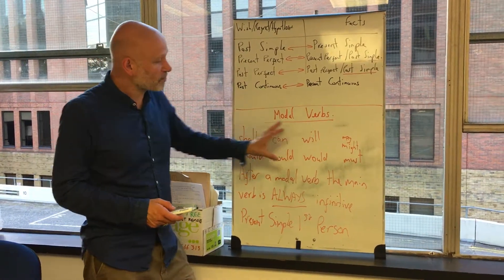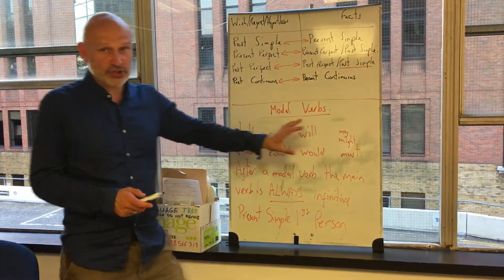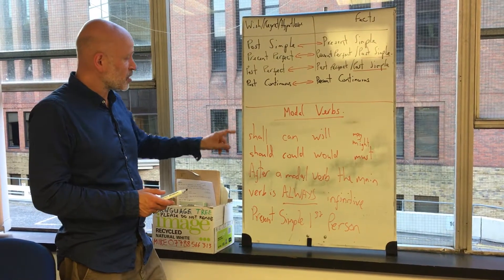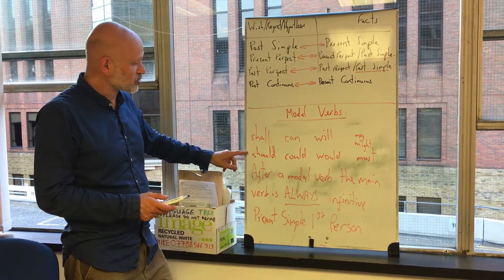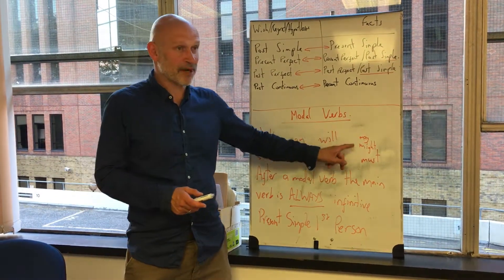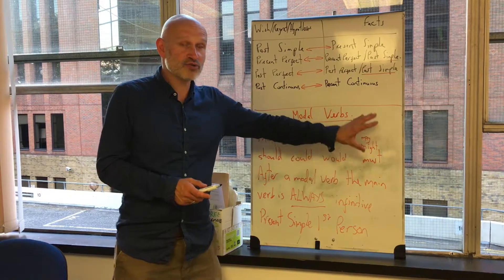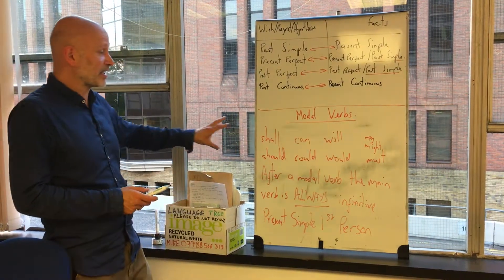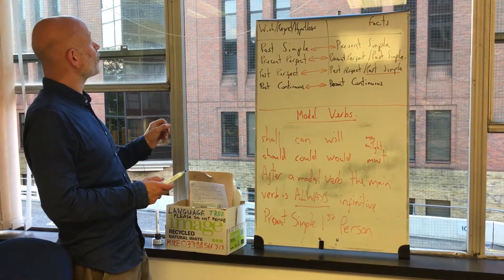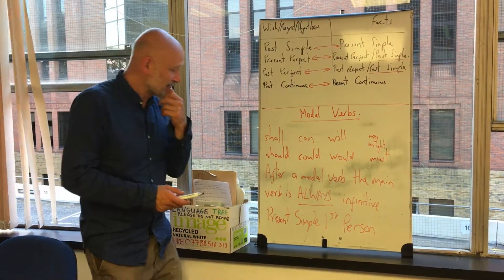Here are all the modal verbs that we use — these are the most common ones: shall and should, can and could, will and would, may, might, must. Those are the nine main modal verbs that we use.